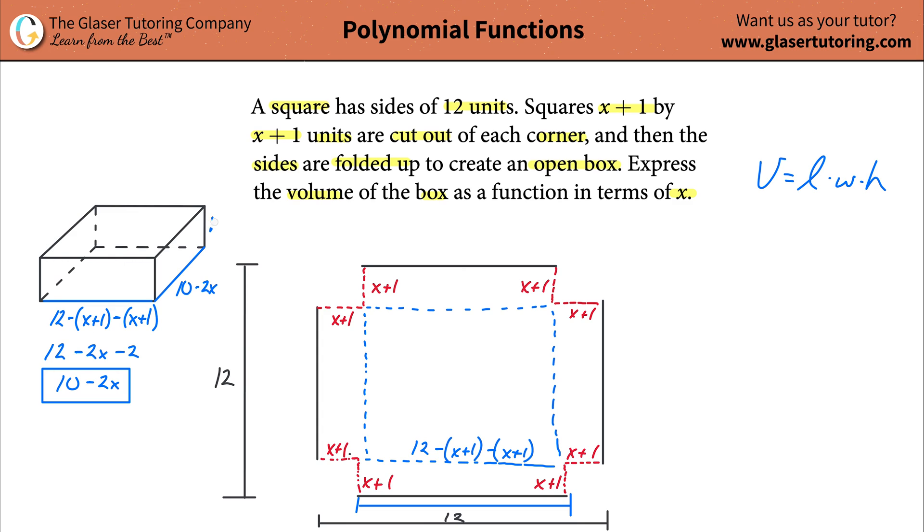Now to speed this up a little bit, because it was a square, the base has to be a square. If the length we know was 10 minus 2x, then what do you think this width has to be? Well, that also has to be 10 minus 2x. So that's going to be also 10 minus 2x. Now, what about the height? What is the height?